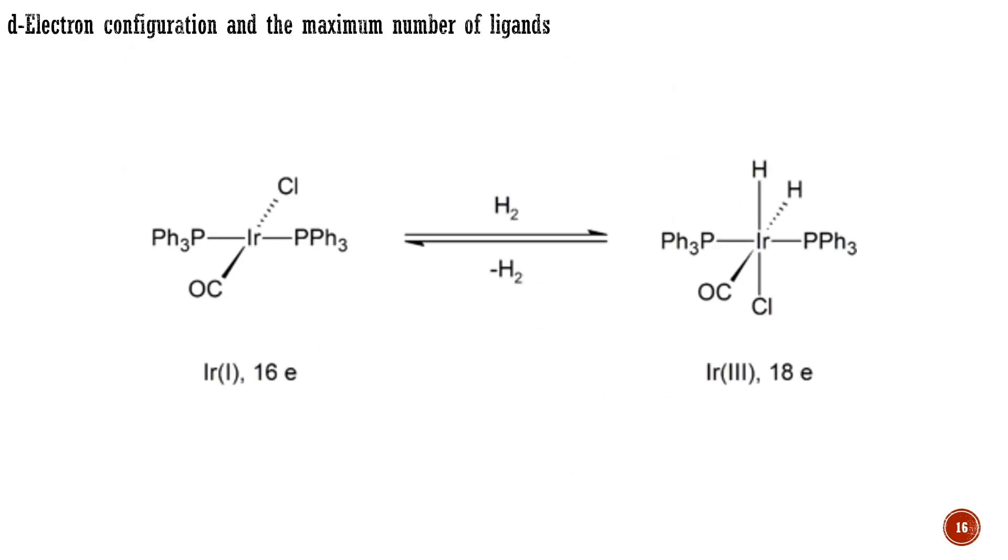Compounds having the maximum allowable number of ligands, that is, having 18 electrons in the bonding shell, are said to be coordinatively saturated, that is, there are no remaining coordination sites on the metal. Complexes not having the maximum number of ligands allowed by the 18-electron rule are said to be coordinatively unsaturated, that is, they have vacant coordination sites. Since vacant sites are usually required for catalytic processes, the degree of coordination is central to many of the reactions described in this course.